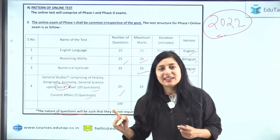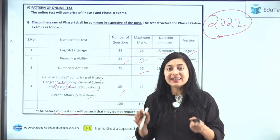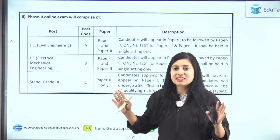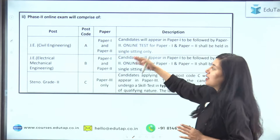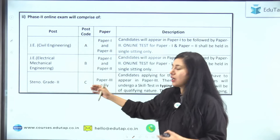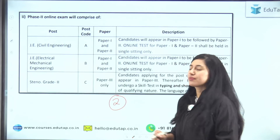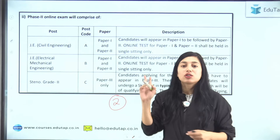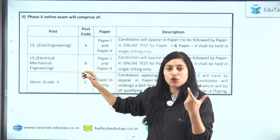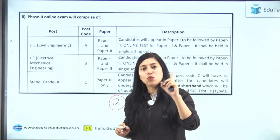Agar aapne Phase 1 clear kar liya, then you will be eligible for Phase 2. Phase 2 ka exam pattern har ek category ke liye different hota hai. Aapki different posts hoti hain — AG3 ke andar bhi General, Accounts, Technical, Depot, etc. Har ek post ko post code diya jata hai. Like Civil Engineering ko A, Electrical Engineering ko B, Stenographer ko C, Technical ko H — alag-alag post code diya jata hai. We have two papers in Phase 2. Usually Phase 2 mein aapke do paper honge. Aapne apna post code dekho aur kaun sa paper dena hai — Paper 1, Paper 2 — because kisi kisi category mein only Paper 1 is required.